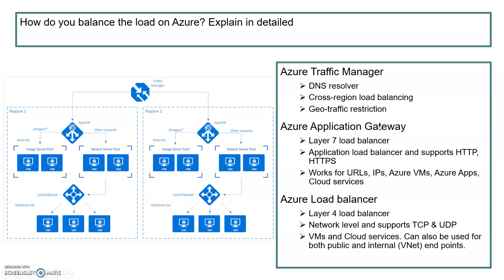Azure Application Gateway works at layer 7 and supports HTTP and HTTPS. It can support your URLs, IPs, Azure VMs, and Azure apps as long as they are configured on HTTP. Within a region, you can configure it between your VMs or between your app services. The next one is Azure Load Balancer, which works at layer 4 — the network level — and supports TCP and UDP. This works with VMs and cloud services at layer 4.